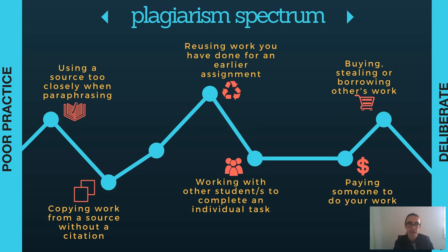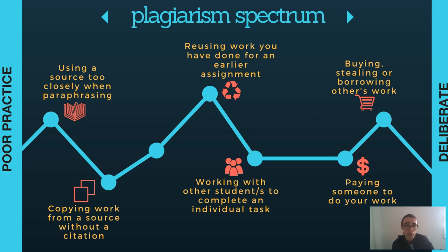There is a plagiarism spectrum which ranges from examples of poor practice that can be worked on and avoided, to serious breaches that are problematic. At the poor practice end might be issues such as using a source too closely when paraphrasing — not putting something into our own words sufficiently — or copying work from a source without a citation. We understand that accidents do happen, particularly when beginning your academic journey, but it is important to avoid these mistakes and learn from them.